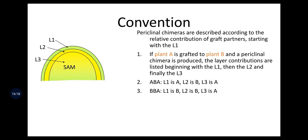Now we shall discuss the kinds of chimera. Based on phenotypic and genotypic observations, chimeras are generally classified as periclinal, mericlinal, sectorial, and solid chimera. We shall discuss them one by one.